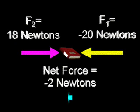In this example, the book will move to the left with the force of 2 Newtons because there is a stronger force moving to the left. We can also say that these forces are unbalanced because they have a net force. Any movement of an object is the result of unbalanced forces.